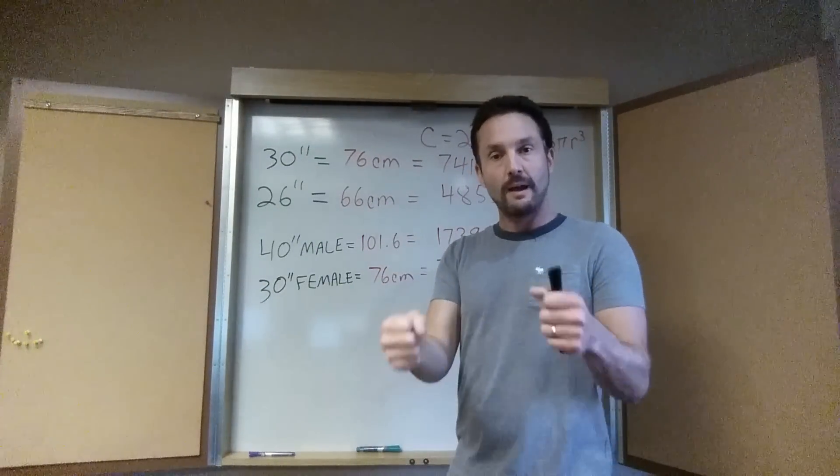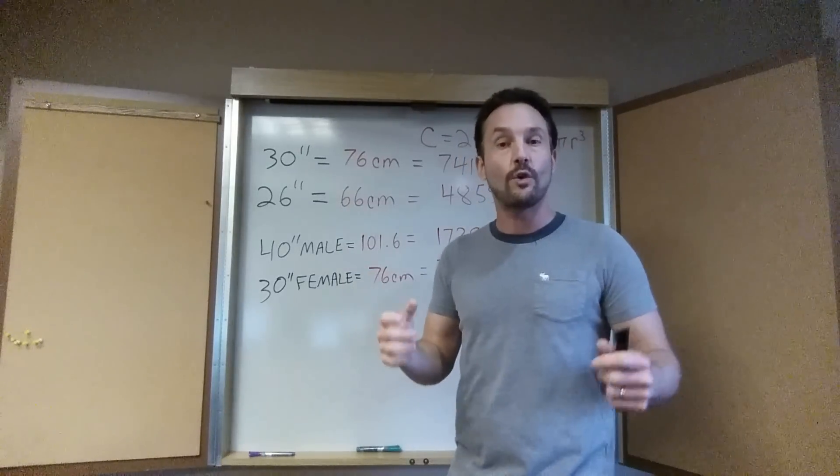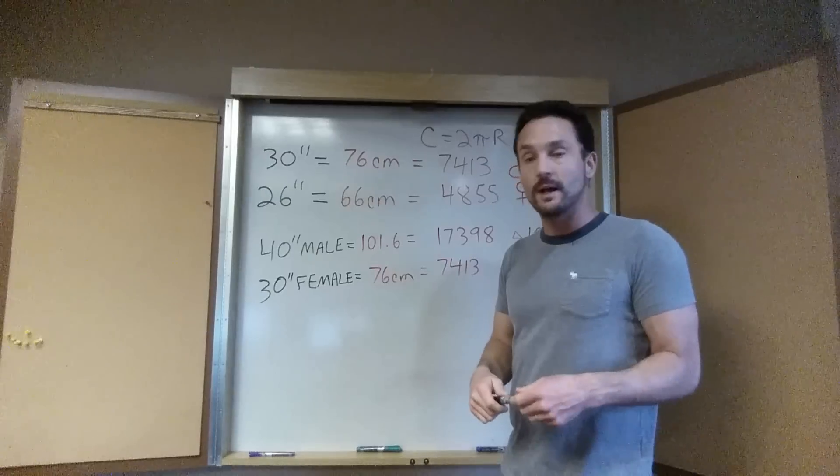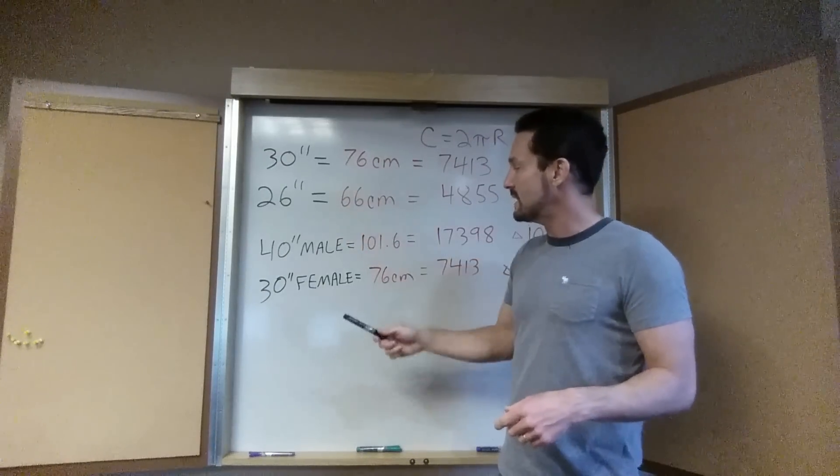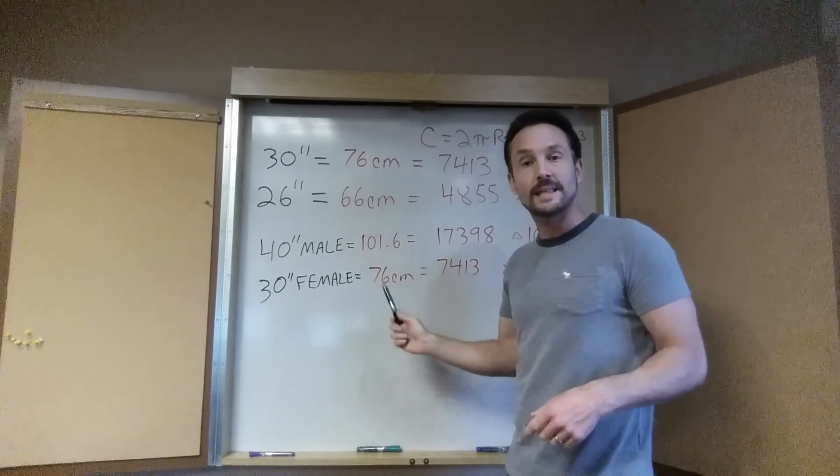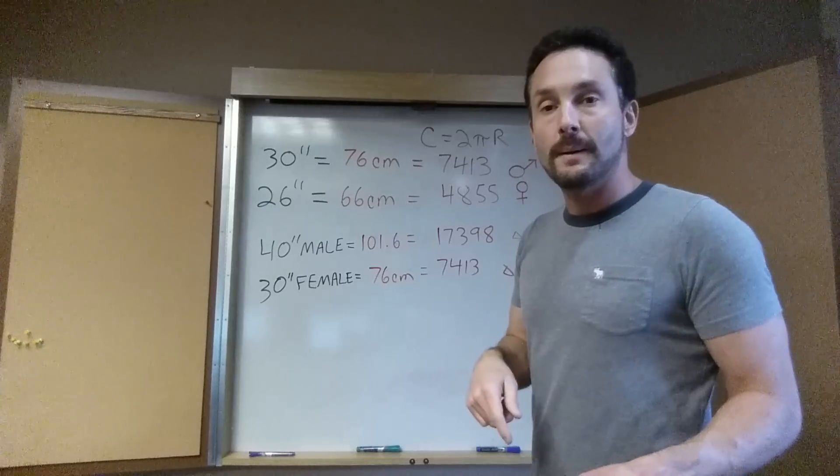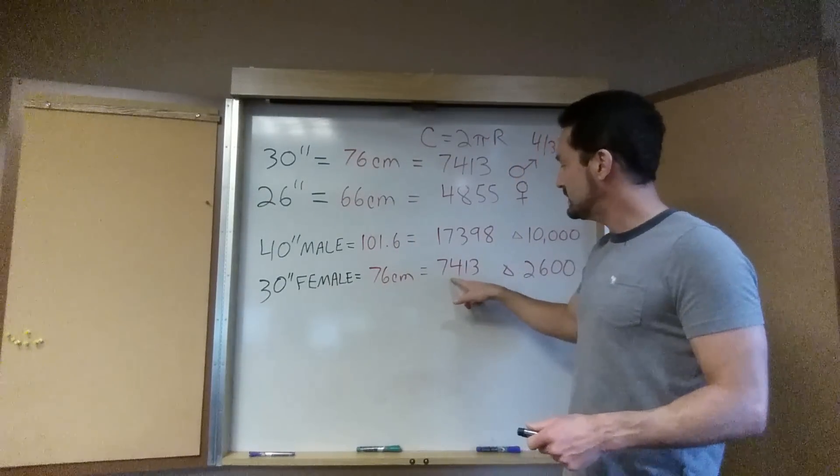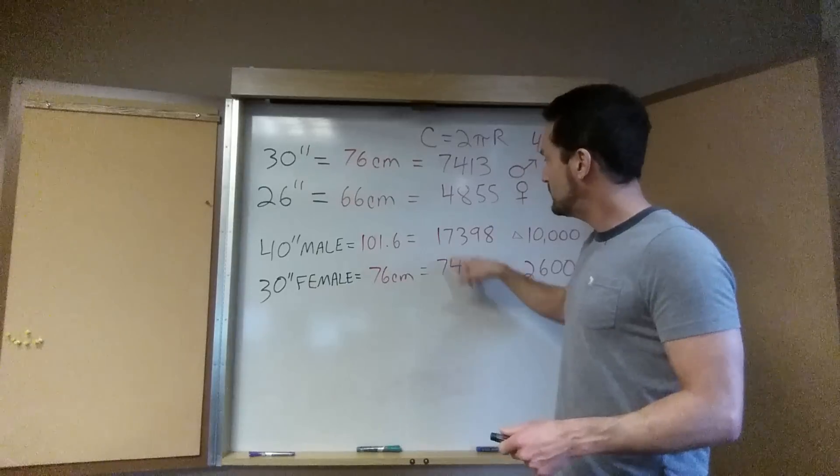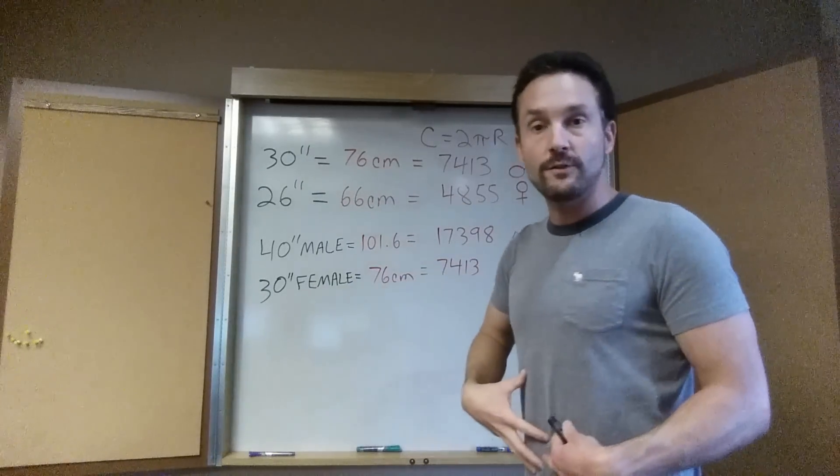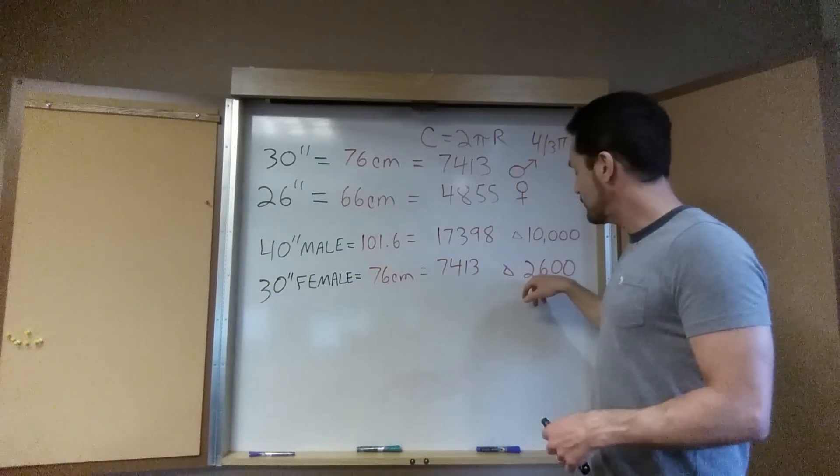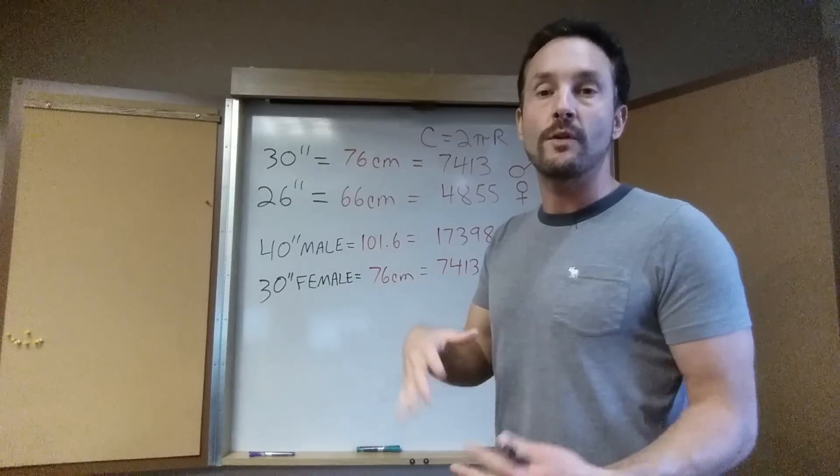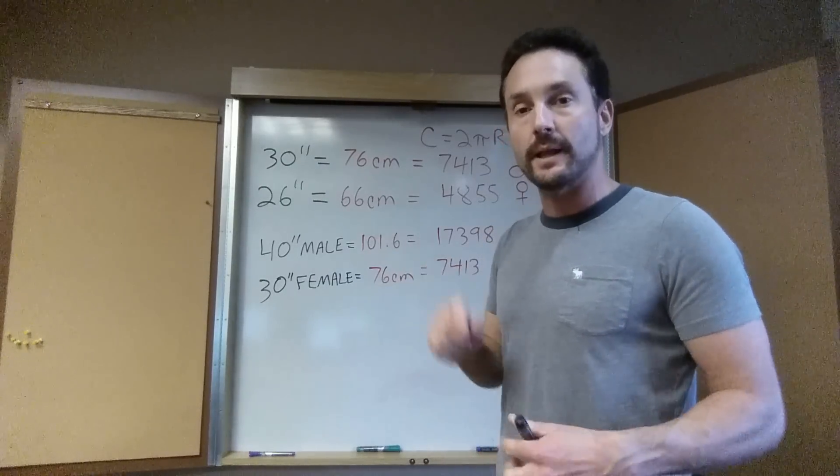I had said two gallons before but that's a pretty good estimation. Let's do a 30 inch female and that's going to be the same number as that. So 30 inch female has a 76 centimeter circumference. I'll get into the equation and that is 7,413 difference between that and 4,800 of organs for a female and that 30 inch female has 2.6 liters or a little bit more than a half a gallon of fat in her belly.